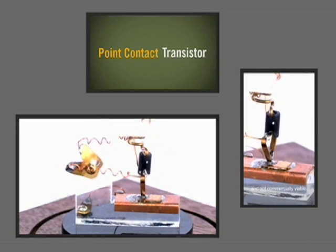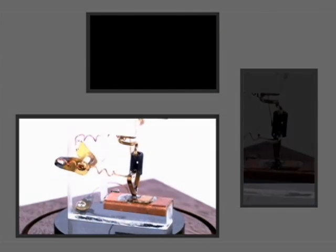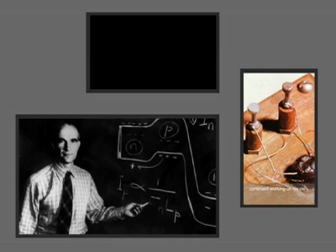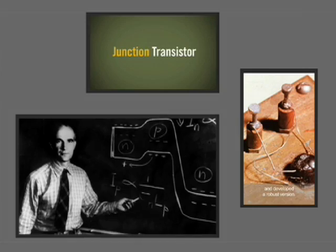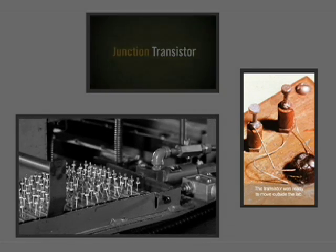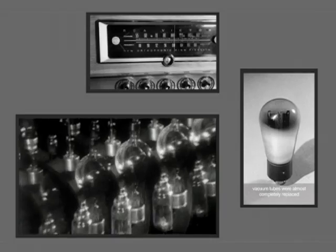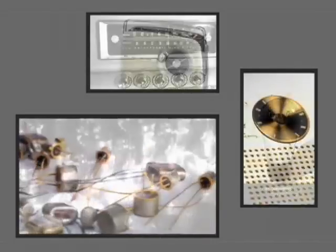One of the scientists, William Shockley, continued working on his own and developed a robust version. The transistor was ready to move outside the lab. Within ten years, vacuum tubes were almost completely replaced by transistors.